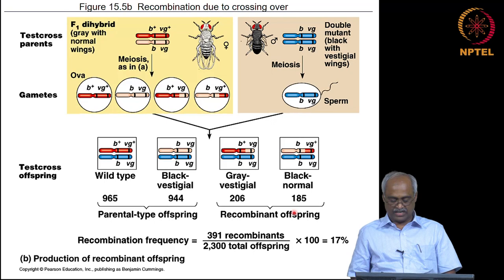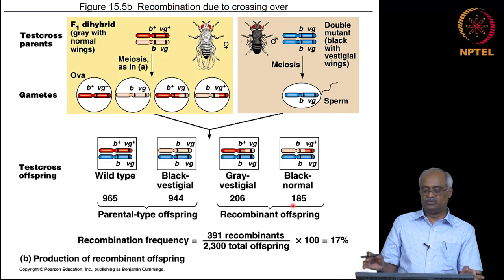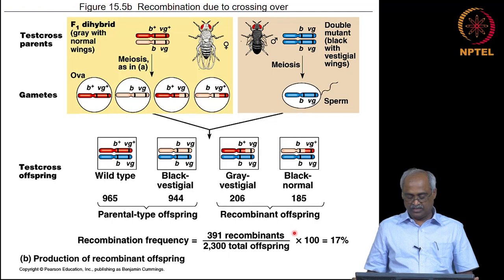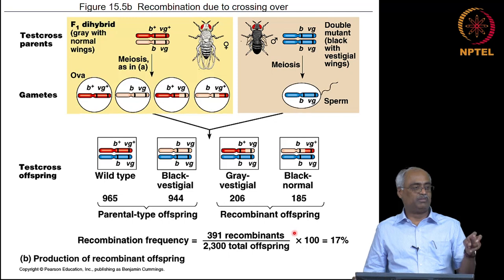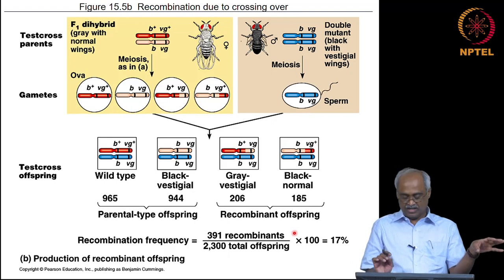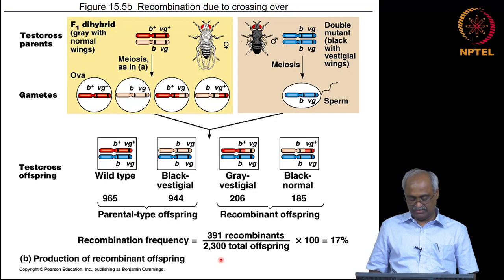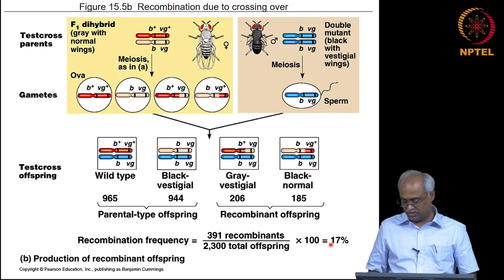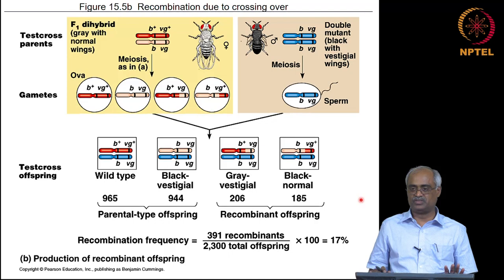You can determine recombination frequency by calculating among test cross progeny: total the progeny obtained — in this example 2,300 — then count how many are recombinants (black body with normal wing, or gray body with vestigial wing). In this experiment that number is 391. So 391 divided by 2,300 multiplied by 100 gives 17 percent. The recombination frequency in this case is 17 percent.